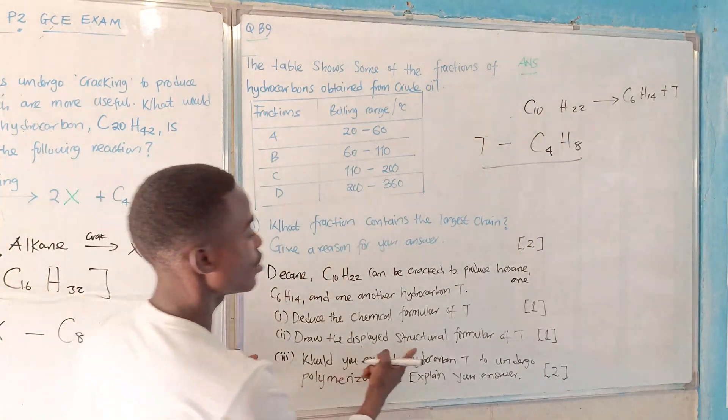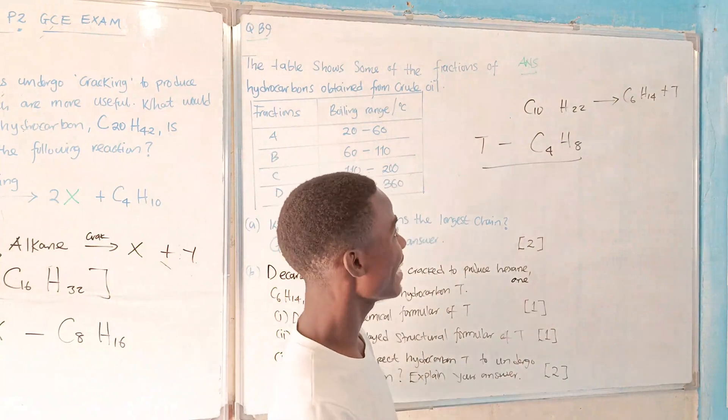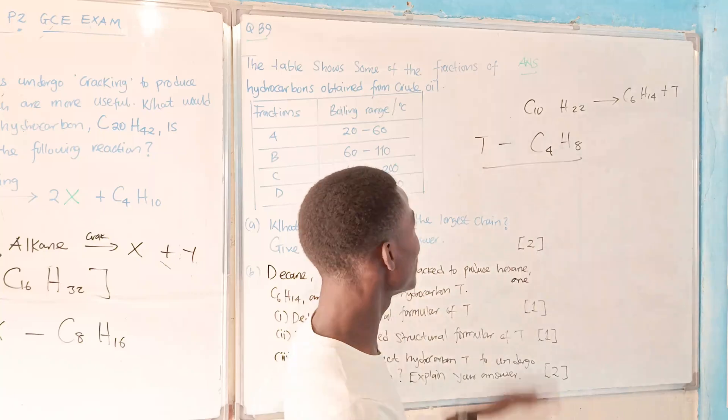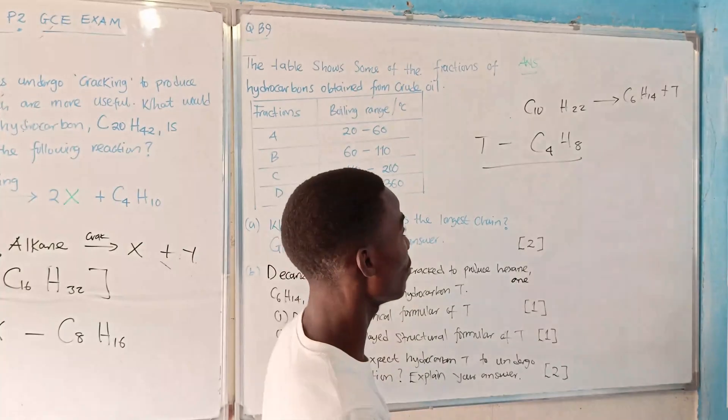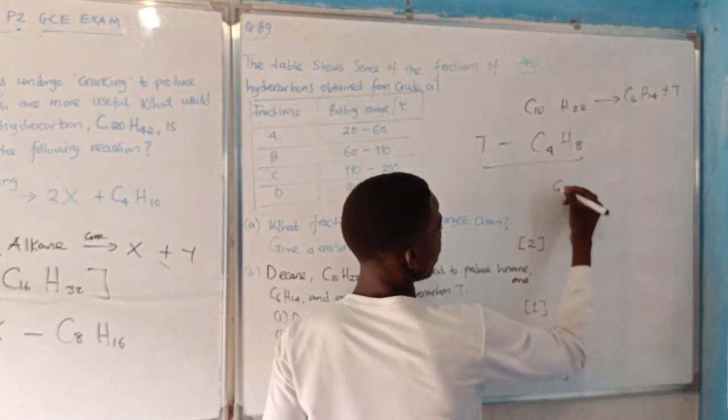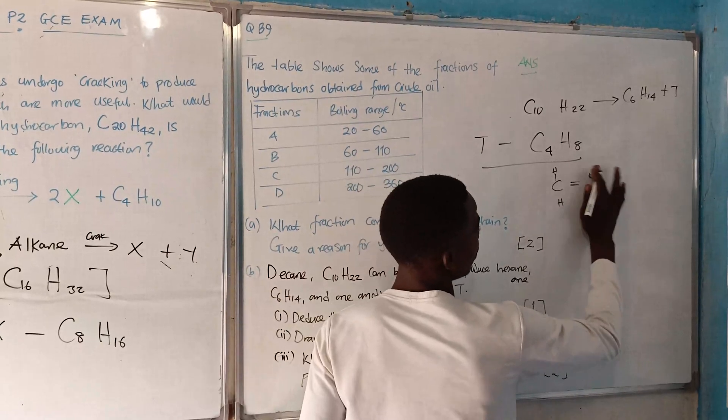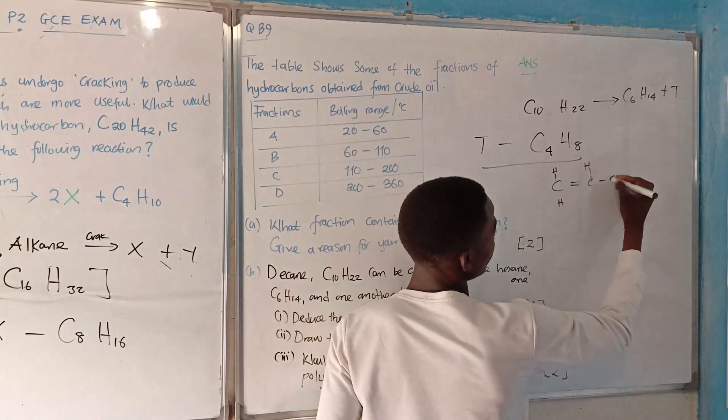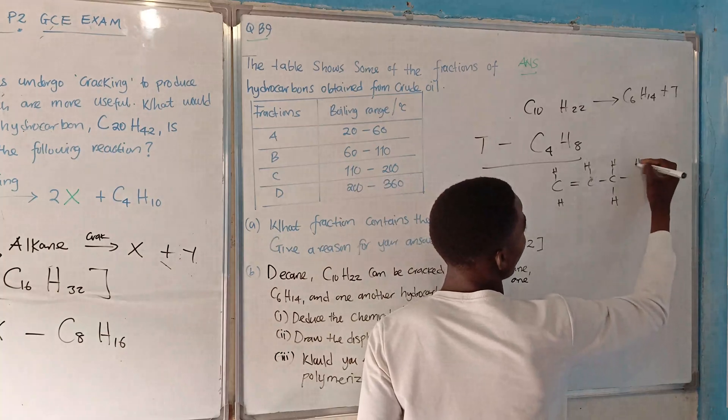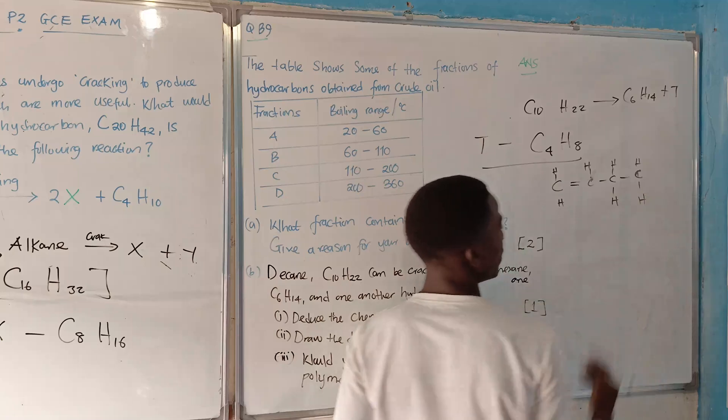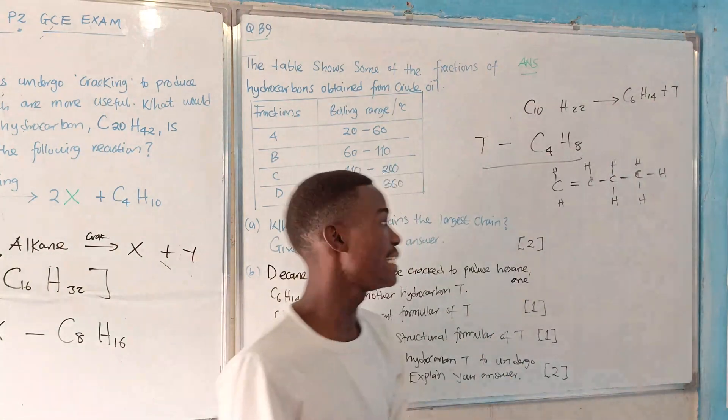Draw the displayed structural formula of T. Well students, remember again that this T is an alkene and alkenes have a double bond. They are unsaturated hydrocarbons. So all we need to do is to write with the double bond. I need to have 4 C's and 8 hydrogens. This is the displayed structural formula of T.